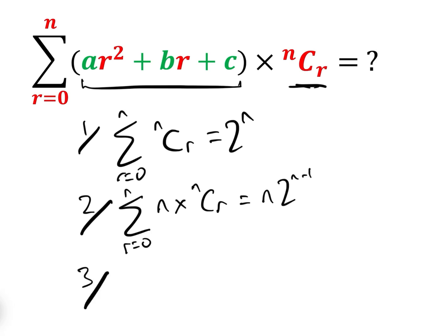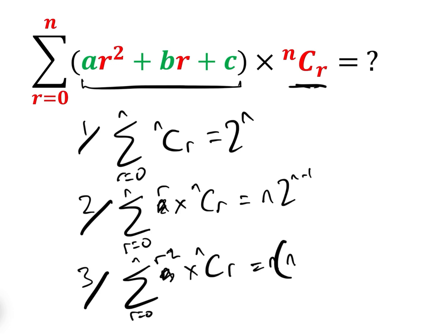And the third one is the sum between R equals zero and N of R squared times NCR, which equals N times N plus one times two to the N minus two.